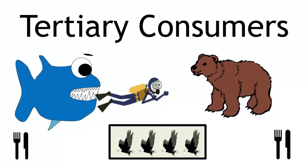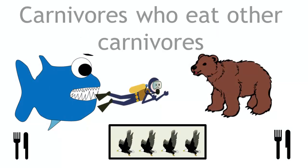Secondary consumers are followed by tertiary consumers. Level 4 is carnivores who eat other carnivores.